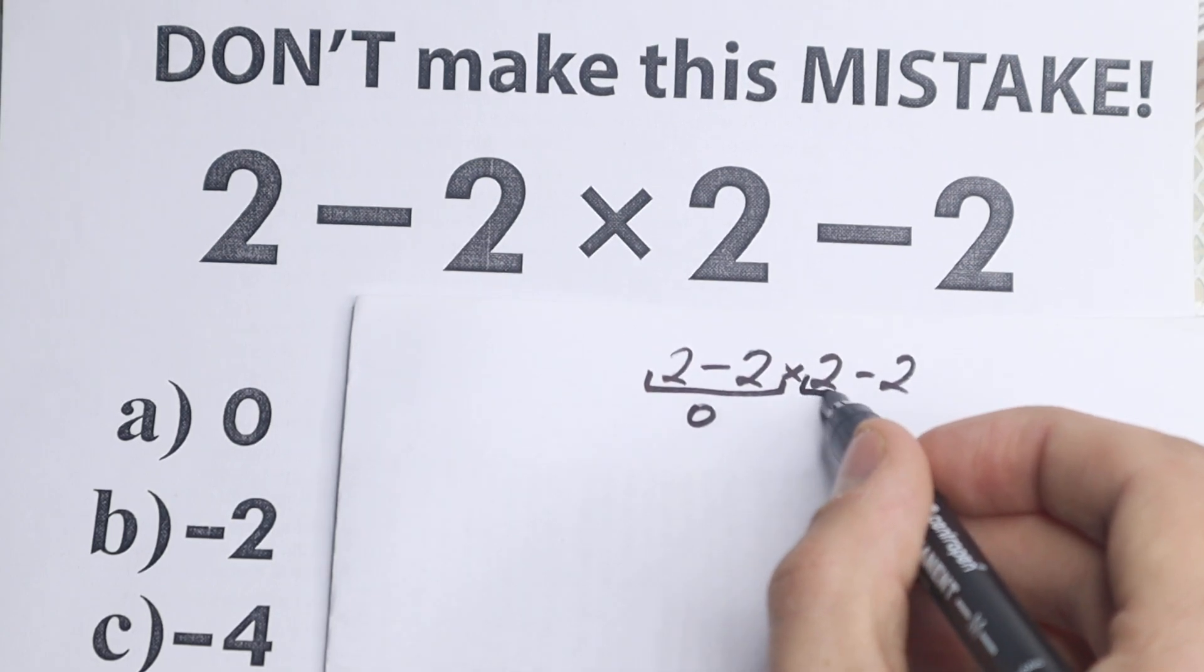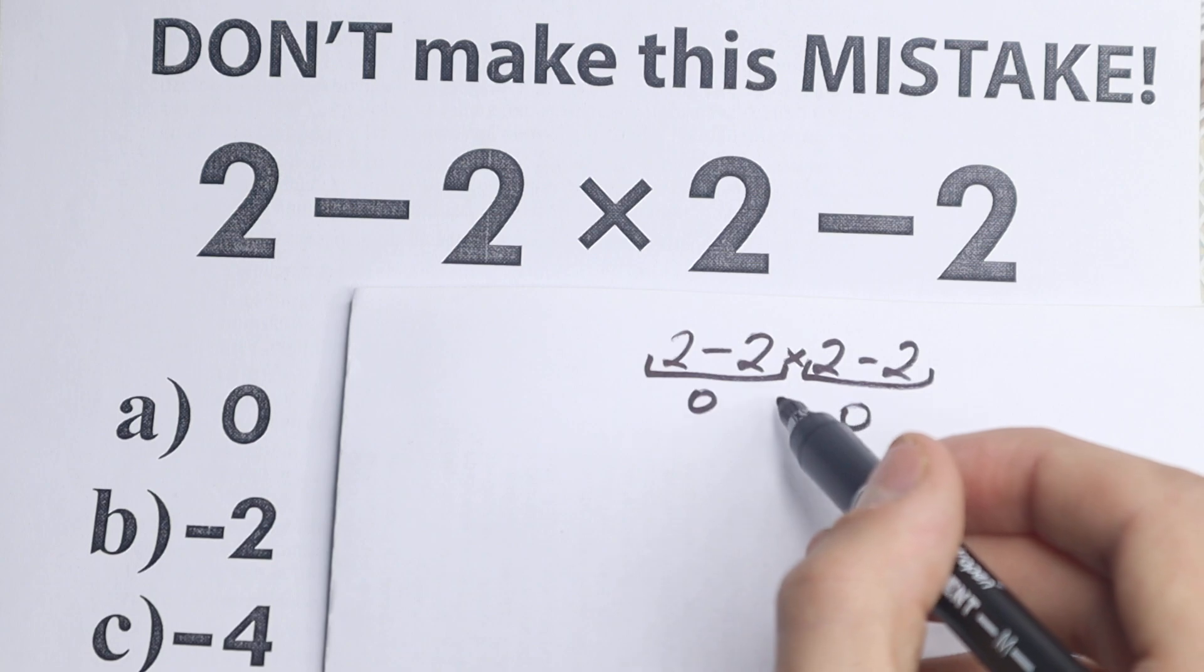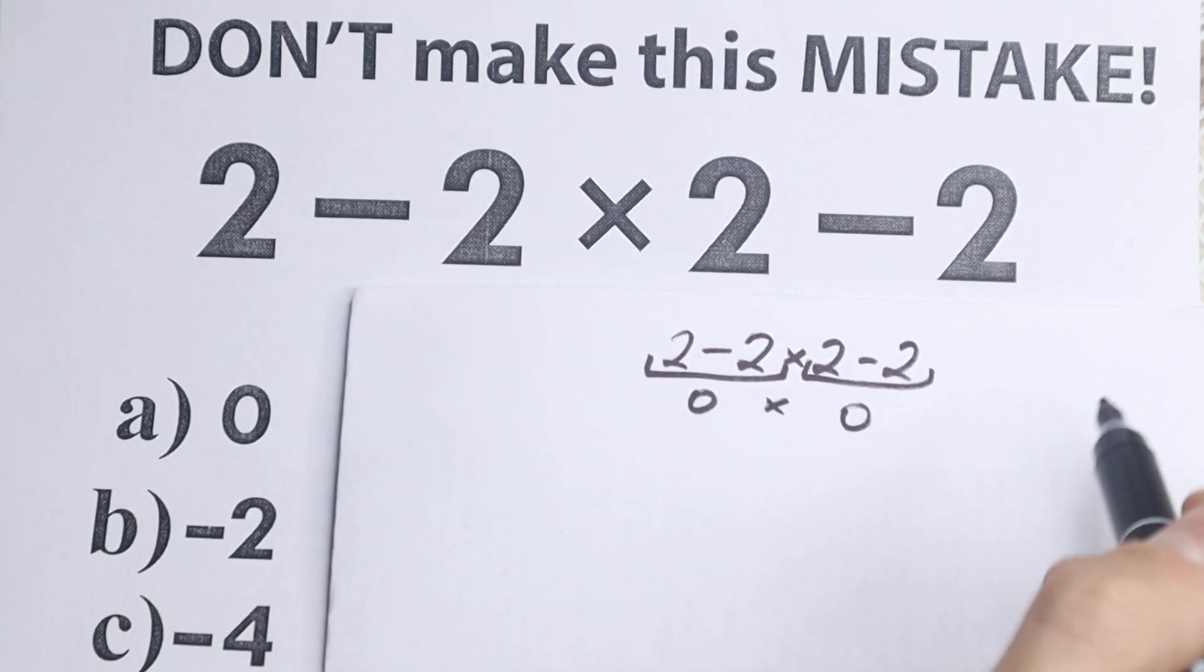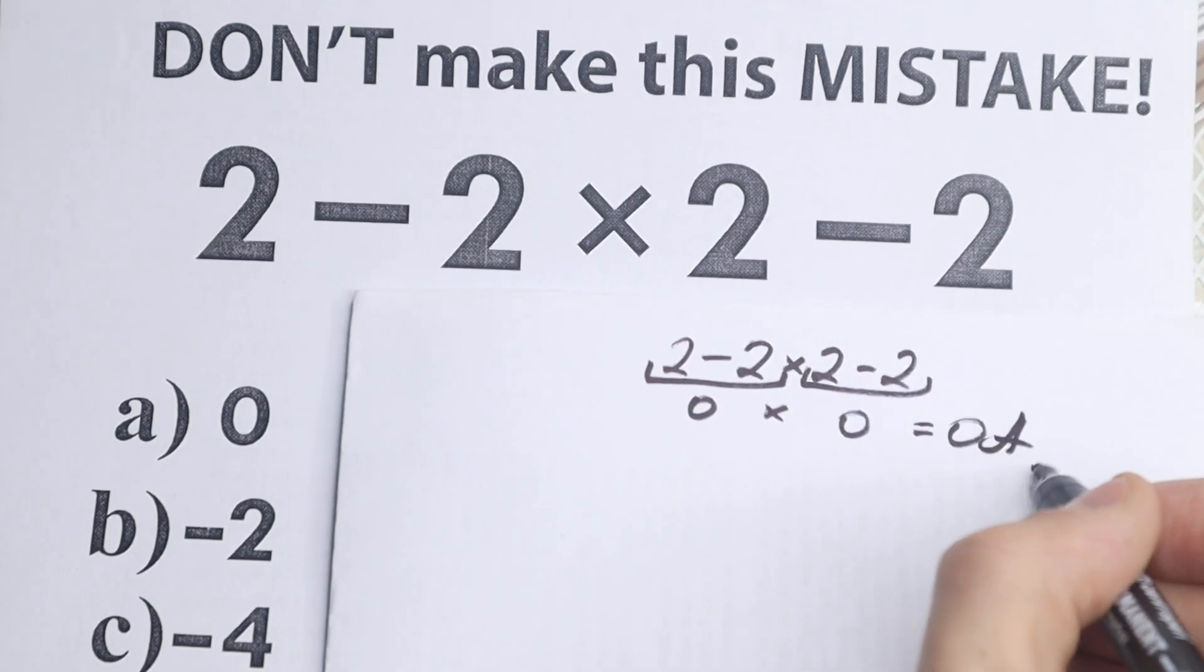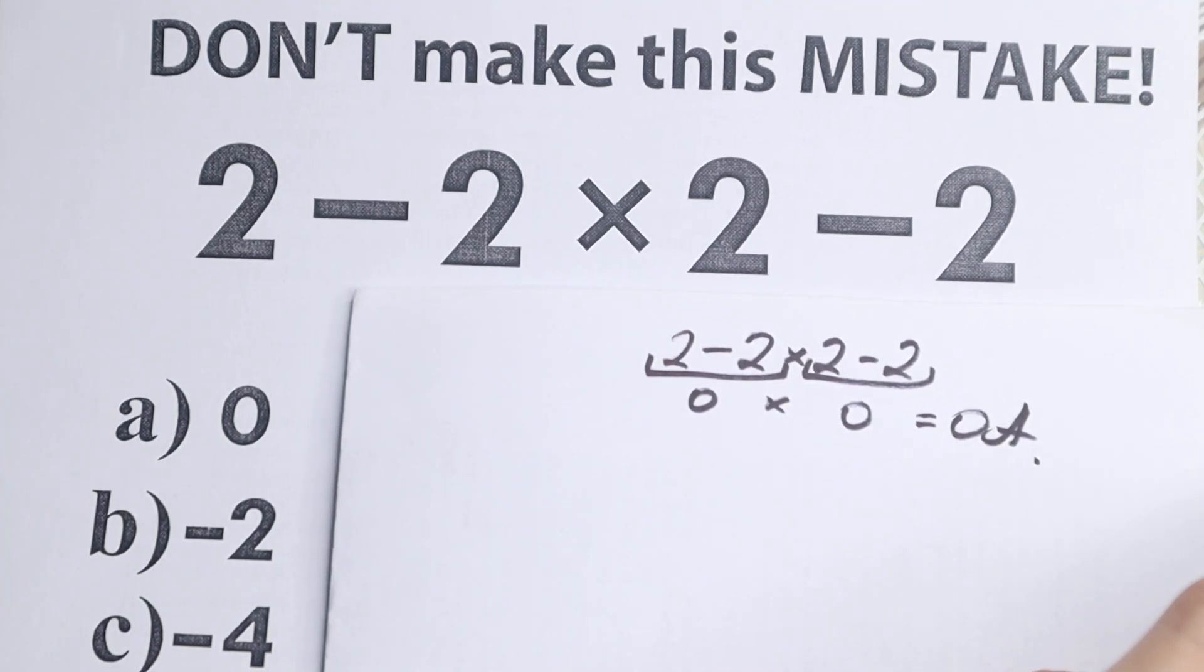And 2 - 2 at the end also equals 0, and we still have multiplication. So 0 × 0 equals 0, and a lot of students say option A is correct, because option A is 0.